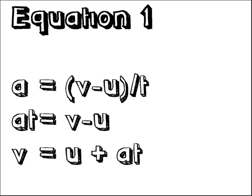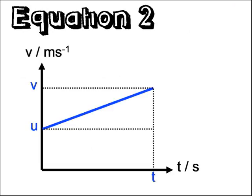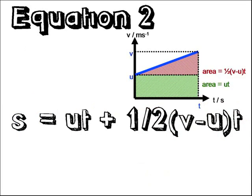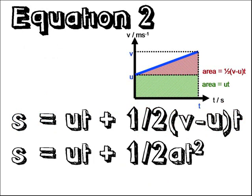Equation 2 is gotten when you plot a velocity time graph for a ball traveling at a constant acceleration like this one here. Remember the area underneath a velocity time graph gives you the displacement. So the areas add up to give you s equals ut plus a half at squared. Done.